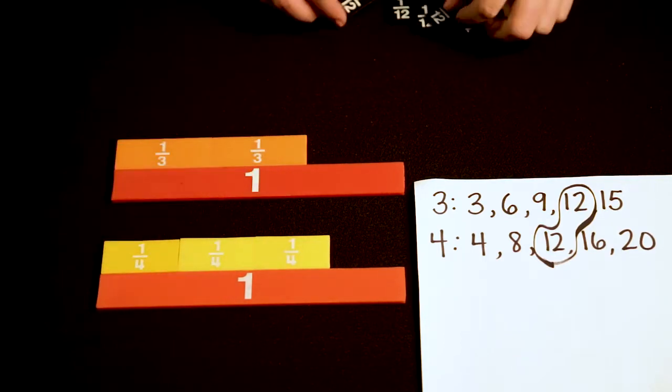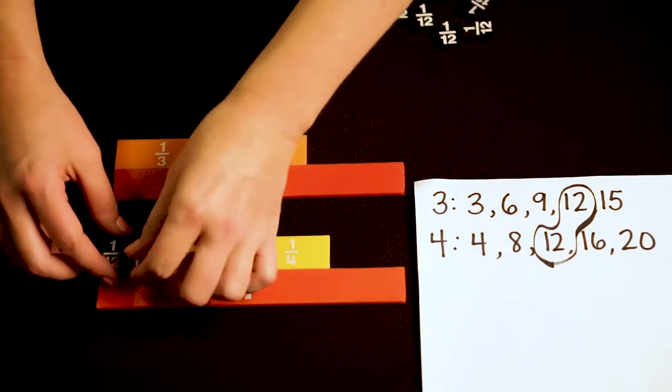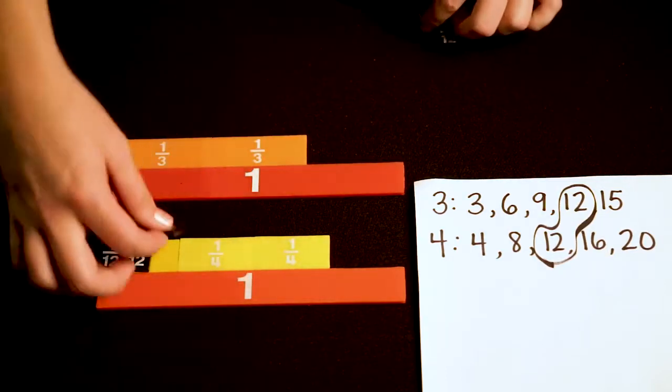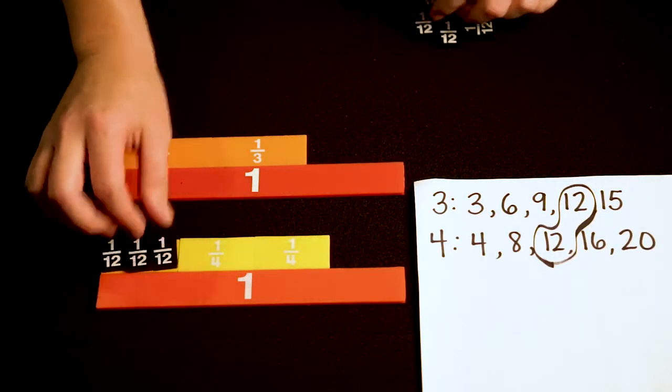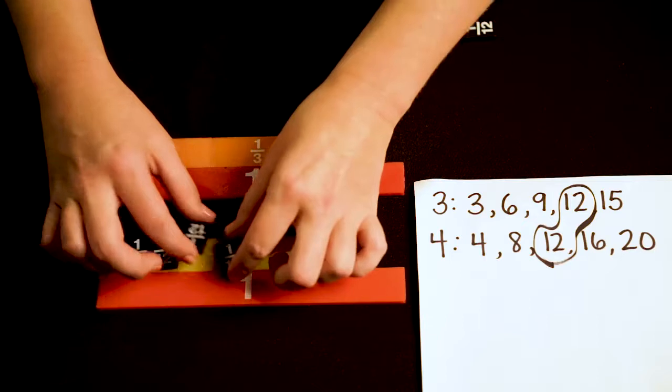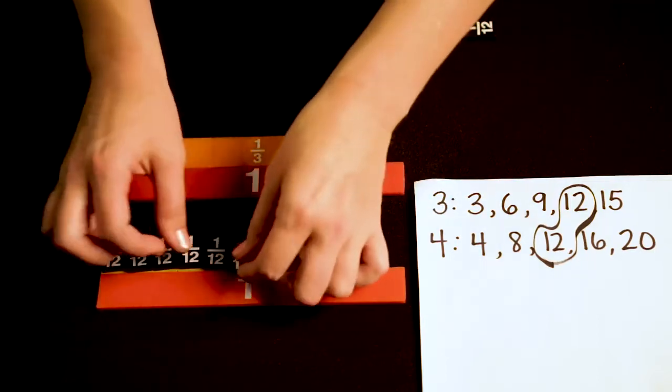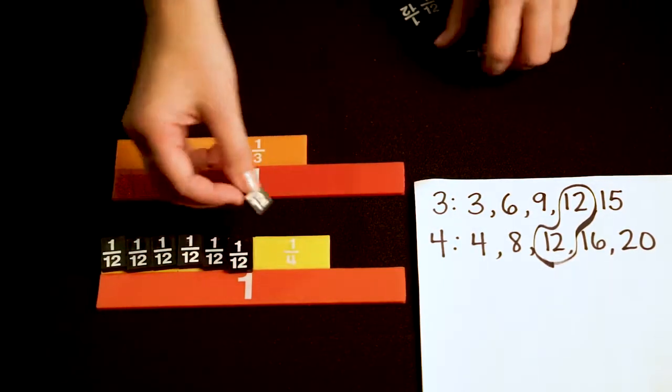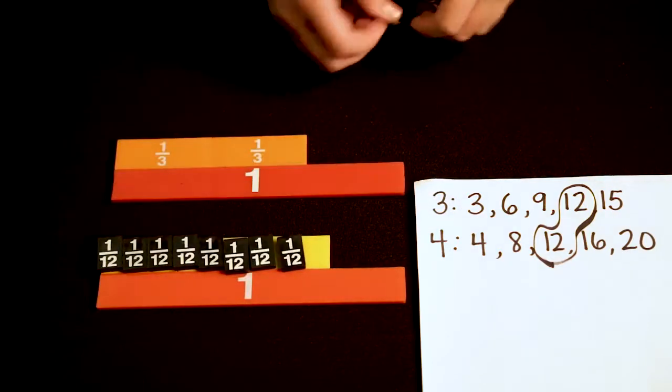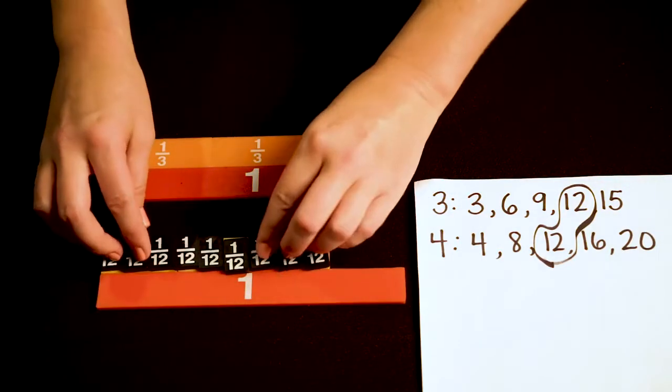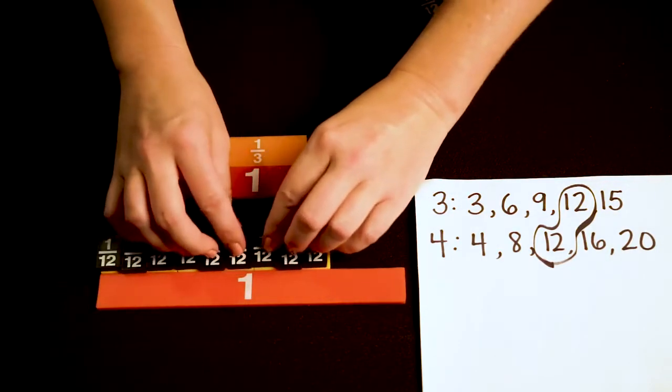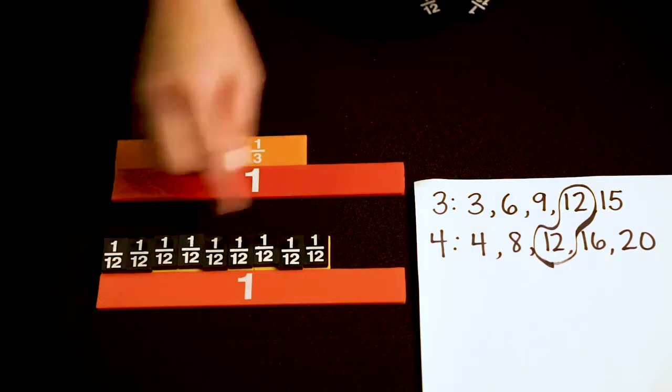I'll break each of these 1 fourth pieces into 3 twelfths. So 1 fourth is equivalent to 3 twelfths. This 1 fourth is equivalent to 3 twelfths. And this 1 fourth is equivalent to 3 twelfths. So altogether, 3 fourths is equivalent to 9 twelfths.